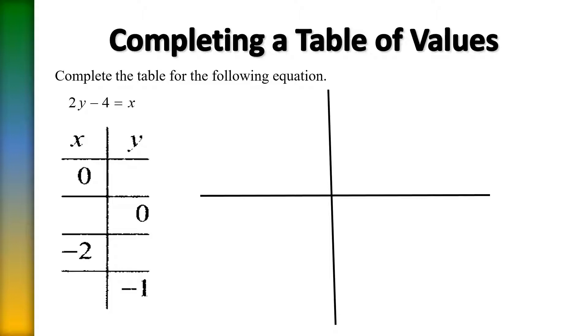So the best way to complete a table is to use what you know to find what you don't know. So on the very first one we're asked to plug in a 0 for x to see what we'll get out for y.